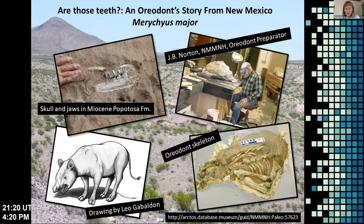This story has stuck with me because it's one of the first detailed collection stories I had ever heard. When I finally got to see this specimen, the story came full circle. This oreodont is definitely my favorite specimen in the New Mexico Museum of Natural History and Science paleontology collection. The stories it shares with us are great examples of the stories all specimens in natural history collections can tell, and this is why it's important to effectively manage museum collections data to keep those stories around for years to come.